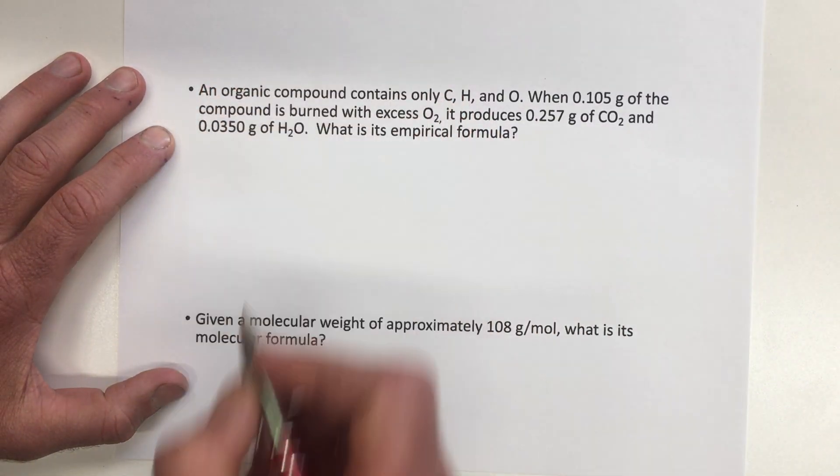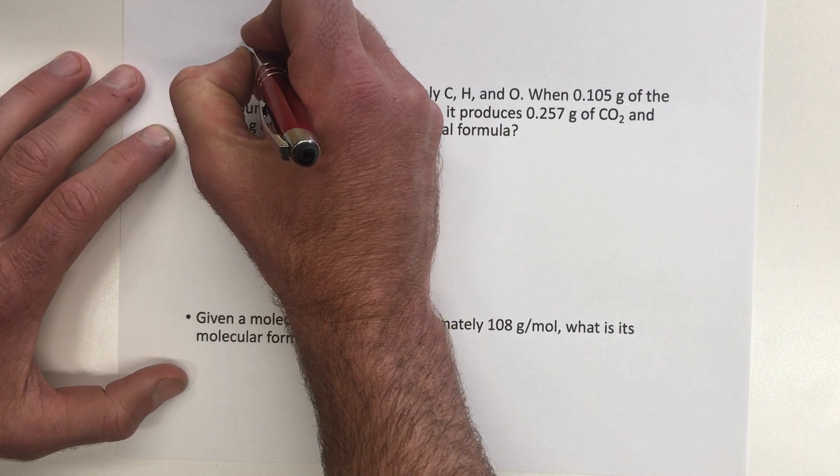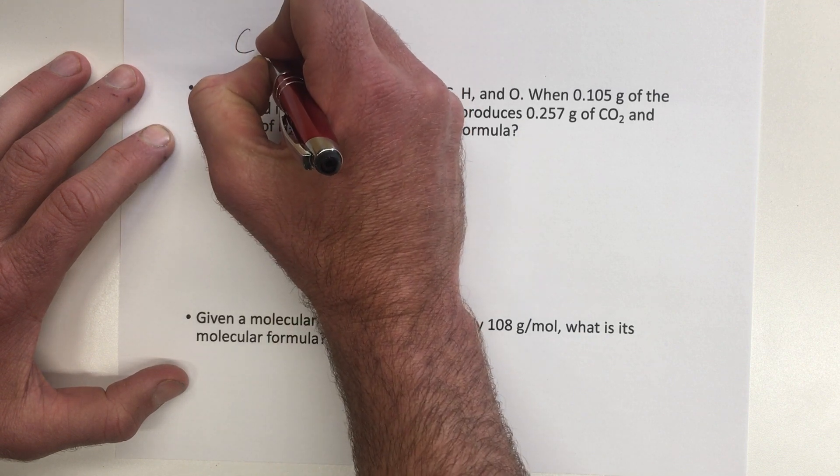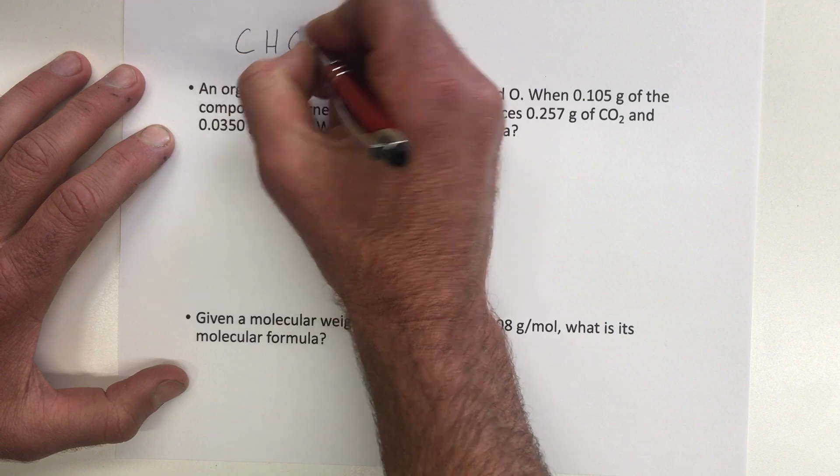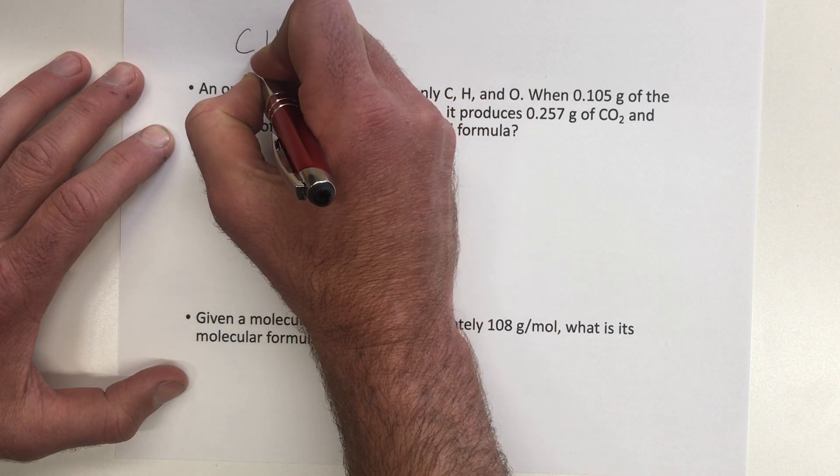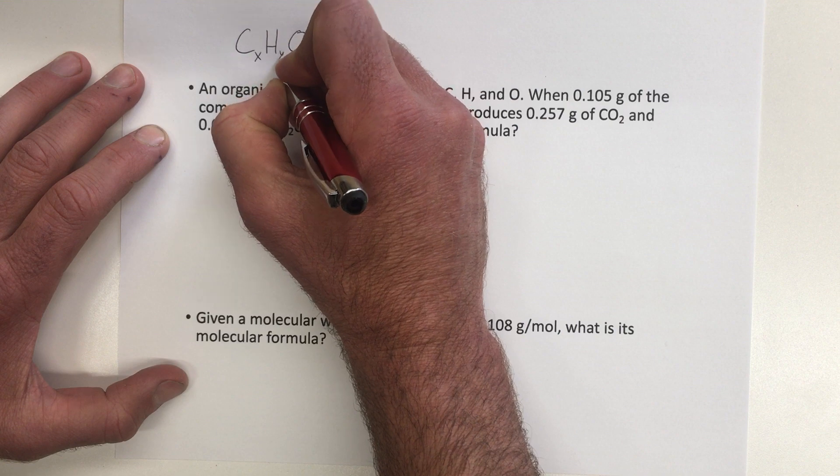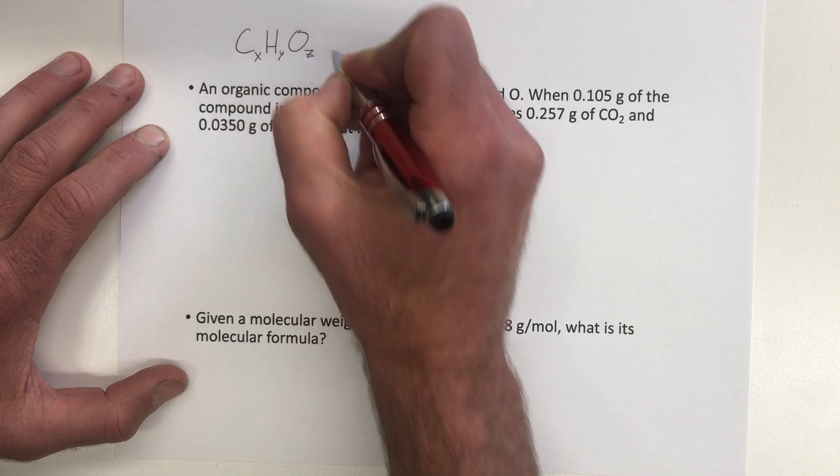Combustion analysis is when you have an unknown hydrocarbon, something that contains carbon and hydrogen, and sometimes another element like oxygen or nitrogen, but you don't know the ratio between the carbon, the hydrogen, and the oxygen.